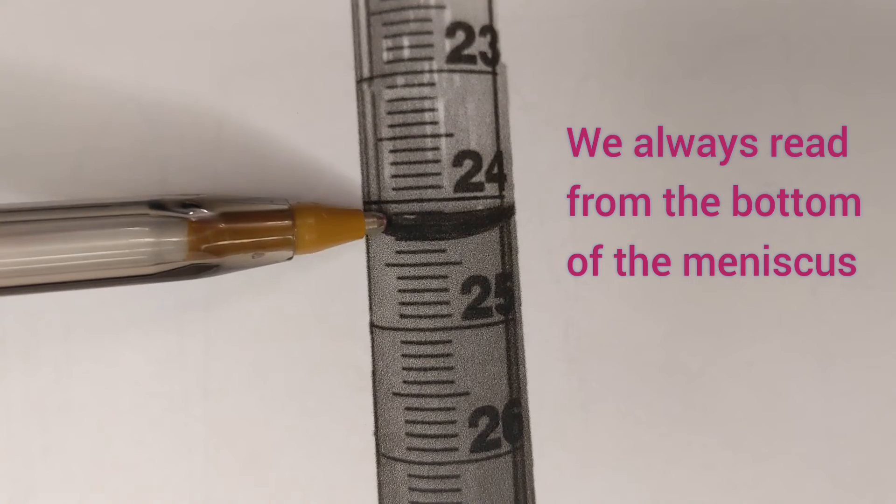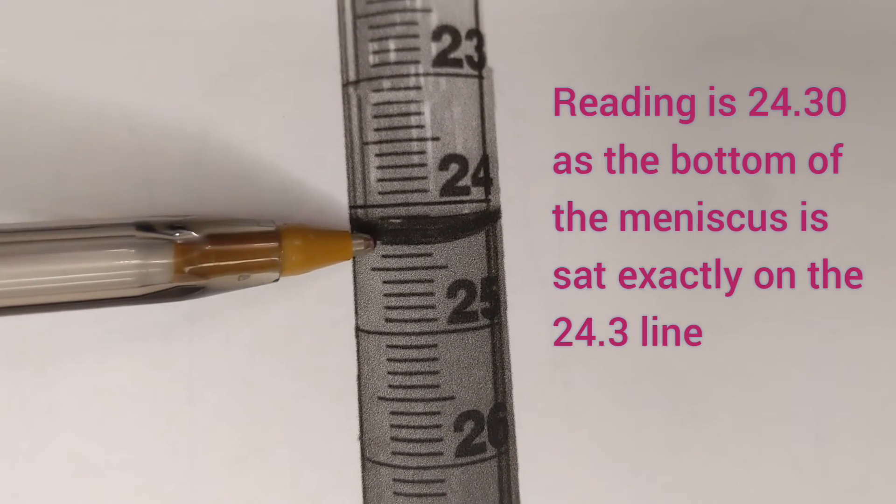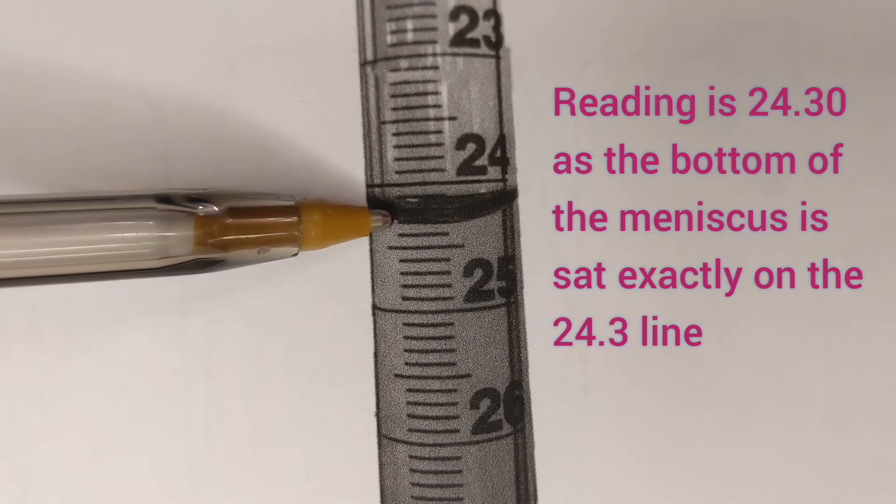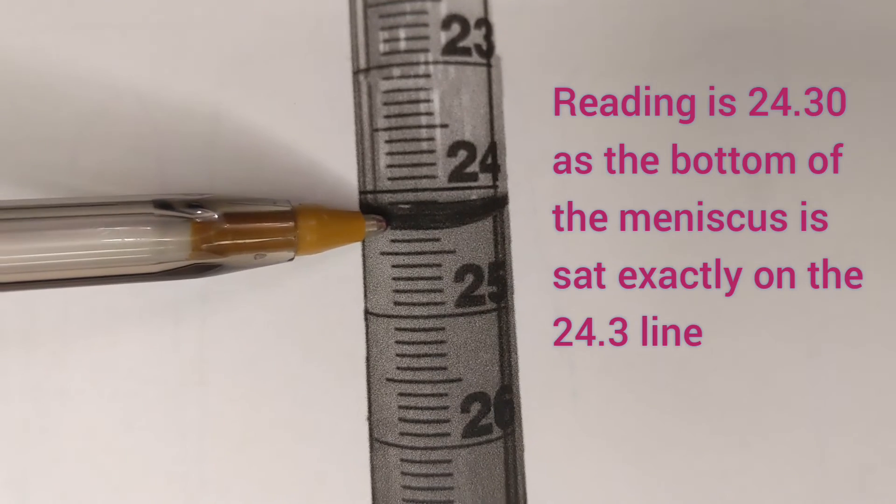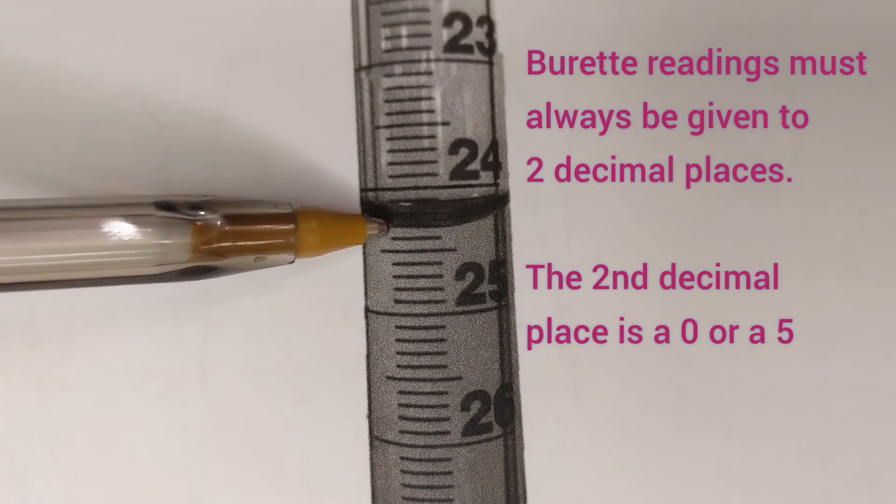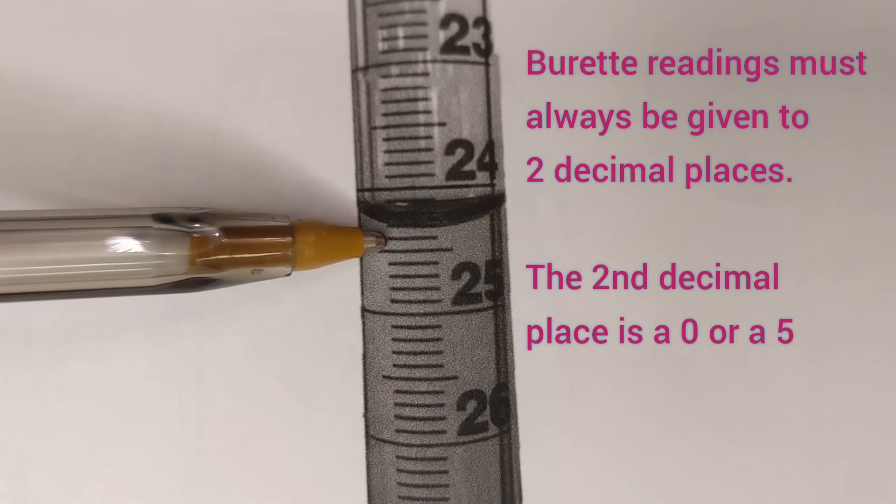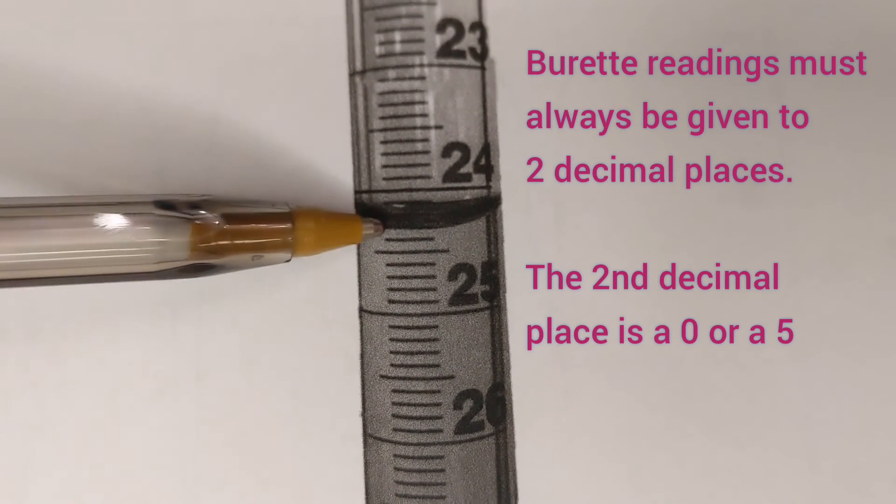So this burette reading is 24.30 because the bottom of the meniscus is sat exactly on this line which is 24.3. If it was in between 24.3 and 24.4 then it would be 24.35 but it's not, it's exactly on the line.